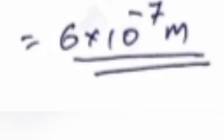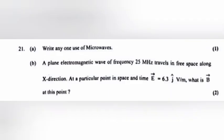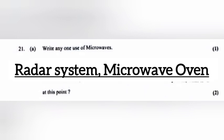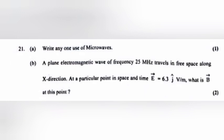Answer: The wavelength of light used is 6 × 10⁻⁷ meter. Question 21a: Write any one use of microwaves. Answer: Radar system and microwave oven.